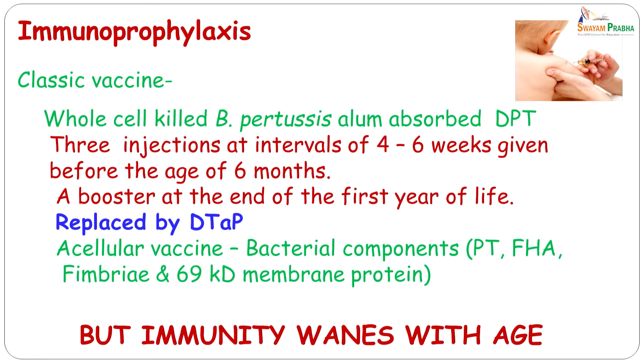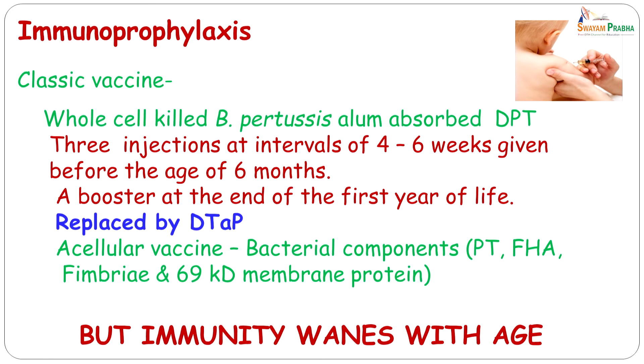This vaccine has been replaced by the acellular vaccine and is now called DTaP. The acellular vaccine consists of bacterial components: the pertussis toxin, the filamentous hemagglutinin, fimbriae, and a 69 kilodalton membrane protein. This has fewer side effects, making people more willing to vaccinate their children. However, immunity wanes with age, and therefore we find that older children are now getting infected by Bordetella pertussis, just like Nupur's elder sibling did. In her case, some residual immunity meant she did not have a severe attack, but the organism persisted in her throat and she transmitted it to her unimmunized sibling.